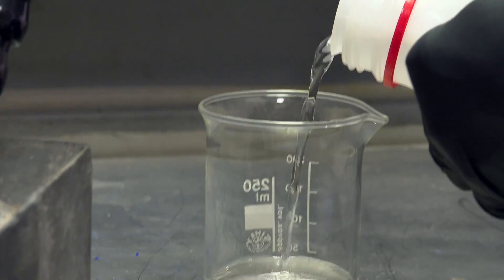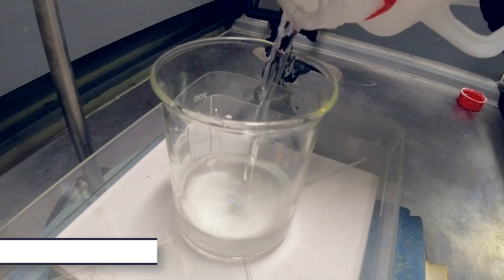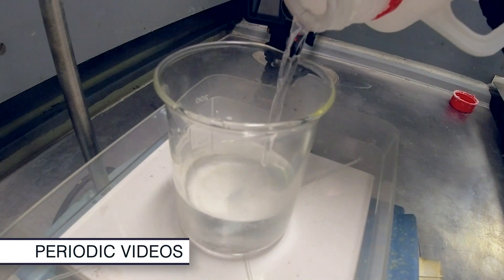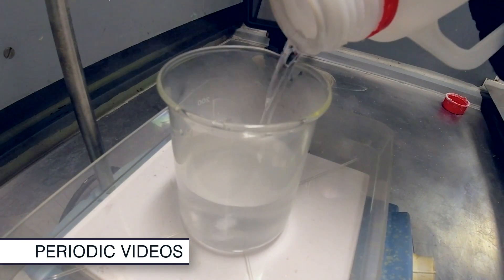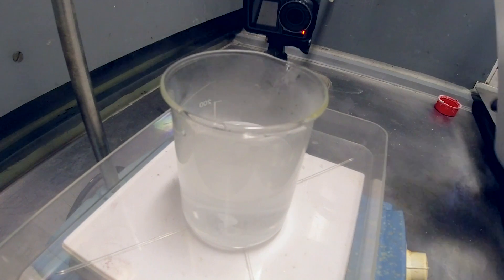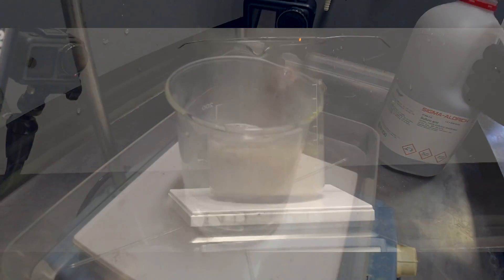Piranha Solution is a mixture of hydrogen peroxide and concentrated sulfuric acid. It's thought they react together to make some peroxo-sulfuric acid, which is very good at oxidizing organic compounds.